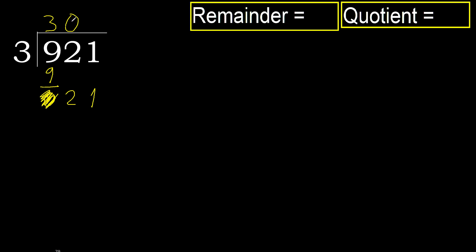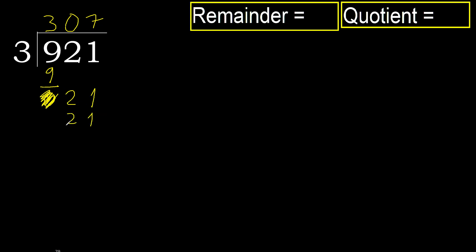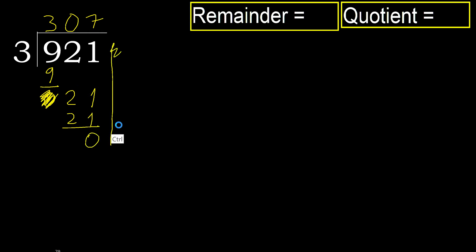Always complete with 0. Complete because here 2 numbers: 21. 3 multiplied by 7 is 21, which is not greater. Subtract: 21 minus 21 is 0. Next — there is no number, therefore finish.